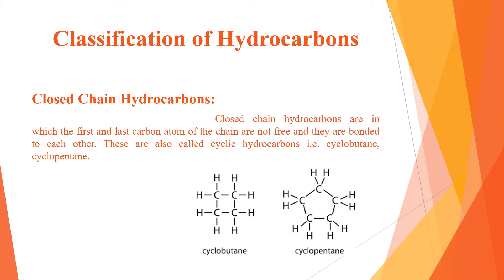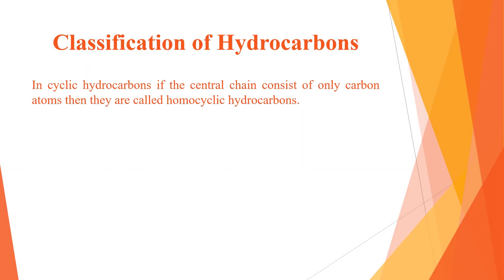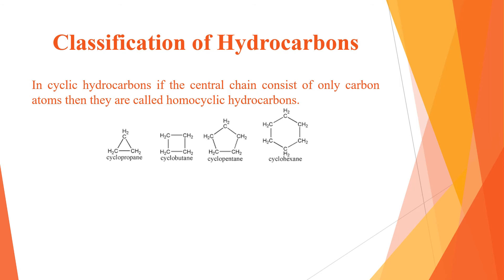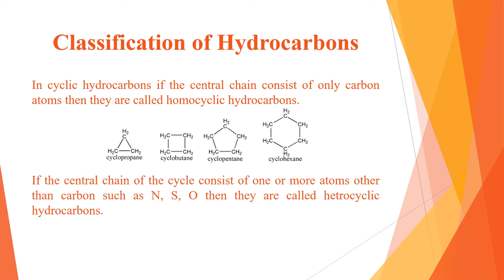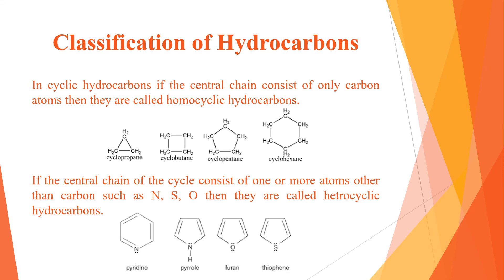In cyclic hydrocarbons, if the central ring consists of only carbon atoms, they are called homocyclic hydrocarbons — for example, cyclopropane, cyclobutane, cyclopentane, and cyclohexane. If the central ring contains one or more atoms other than carbon, such as nitrogen, sulfur, or oxygen, then they are called heterocyclic hydrocarbons — for example, pyridine, pyrrole, furan, and thiophene.